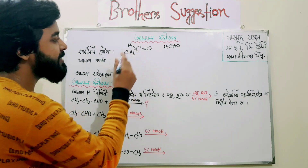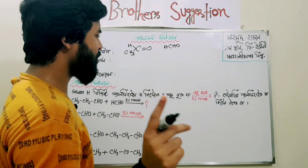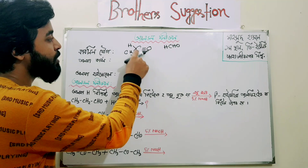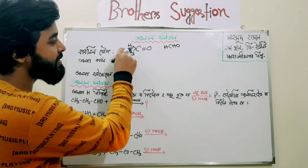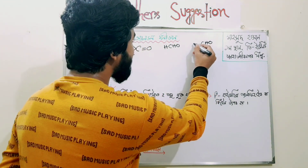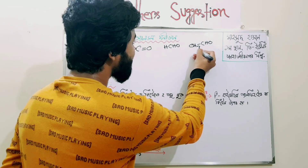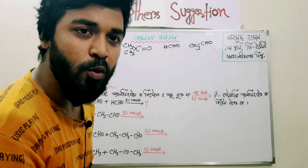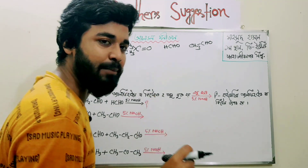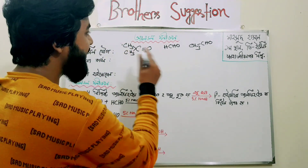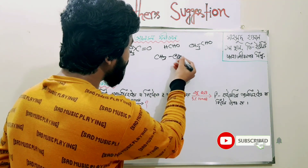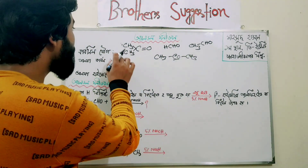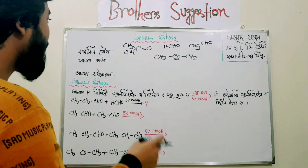CH3 is CH3. The first thing is carbon double bond oxygen. The second thing is hydrozone. CH3 is R — it's called alkyl: methyl, ethyl, butyl, ethyl — everything is available. What is CH3? This is ketone. The second thing is carbon double bond oxygen.